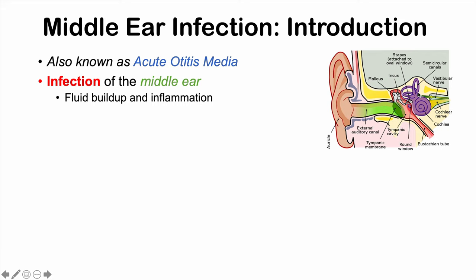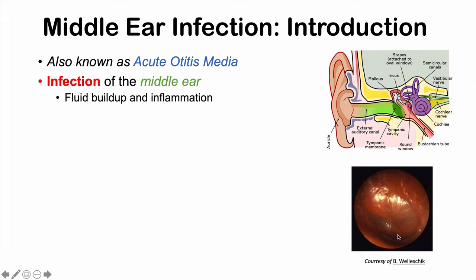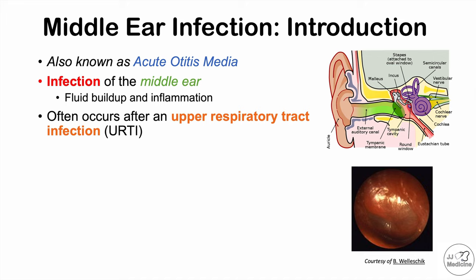With a middle ear infection or acute otitis media, we see fluid buildup and inflammation in this area. Here is what an eardrum or the tympanic membrane looks like when we look inside someone's ear. In a middle ear infection, it is bulging because there is fluid behind that eardrum. A middle ear infection often occurs during or after an episode of an upper respiratory tract infection, which we'll discuss in upcoming slides.